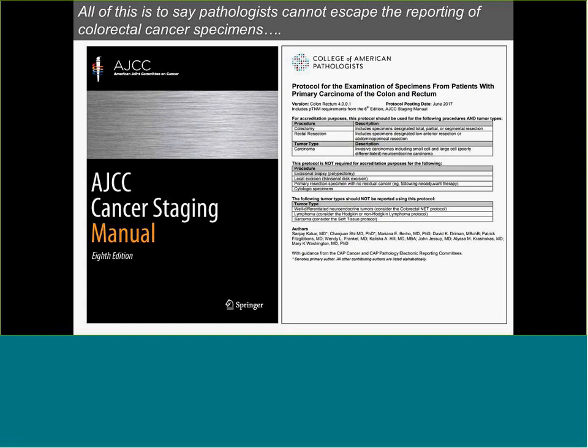All of this is to say that individualized colorectal cancer prevention strategies may very well be on the horizon. Despite the increase in the overall five-year net survival rate, we as pathologists cannot escape the reporting of colorectal cancer specimens. Throughout this presentation, I will be referring to the AJCC 8th edition, as well as the CAP guidelines version 4.0.0.1, posted in June 2017, which incorporated all of the 8th edition changes that came into effect January 1st, 2018.